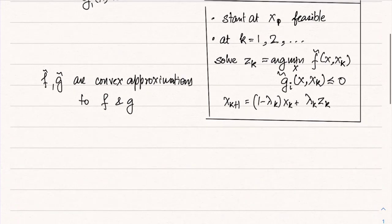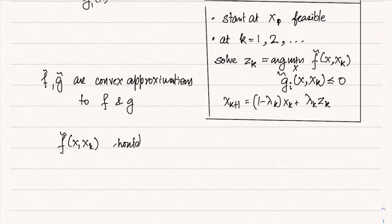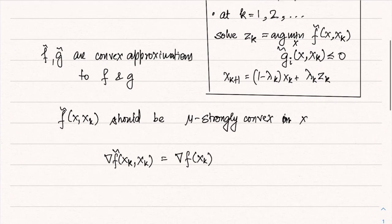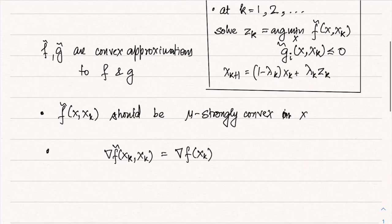Now let us look in detail at what f̃ and g̃ must satisfy. It is required that f̃(x, x_k) must be μ-strongly convex in x. Additionally, the gradient of f̃ at x_k must equal the gradient of f at x_k — that is, ∇f̃(x_k, x_k) = ∇f(x_k).